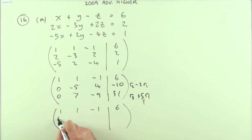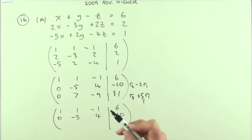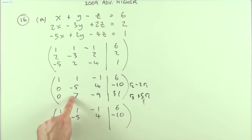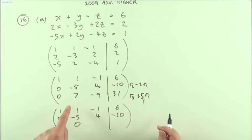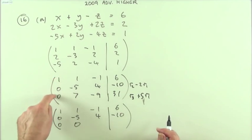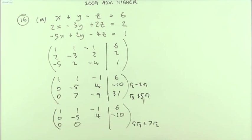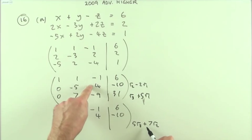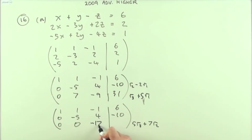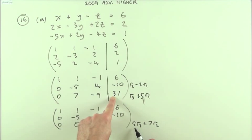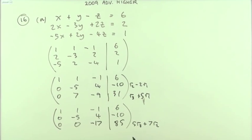Those rows stay as they are; there's no need to reduce further — we can back-substitute. To get the remaining element to zero, we combine the second and third rows. There's no point using the top row here. We take five of row three and add on seven of row two, giving negative 45 plus 28, which is negative 17, and 155 take away 70, which is 85.